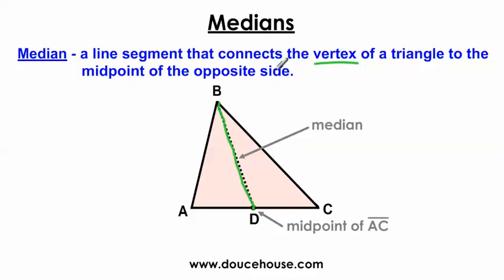Now keep in mind here, I could have also said, let's start with vertex B here and draw a line segment to the midpoint of the opposite side. And again, I'd still get the median.